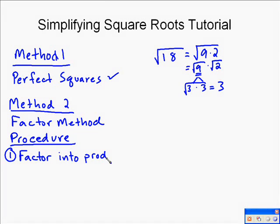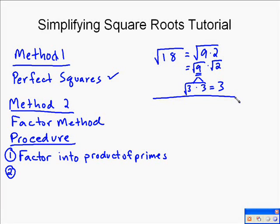The procedure for the factor method is: first, factor the number into the product of prime numbers. For example, 18 factors into 3 times 3 times 2 — that's the product of primes. You can do this using a factor tree or by writing it out. The second step is, once you have the product of primes, pair up all the factors that are the same and put them into pairs.